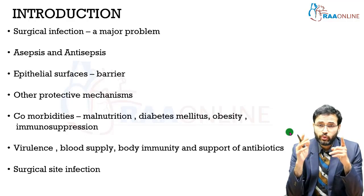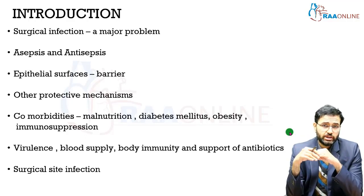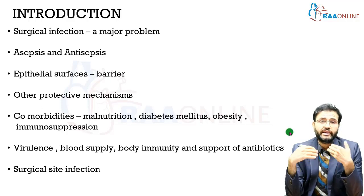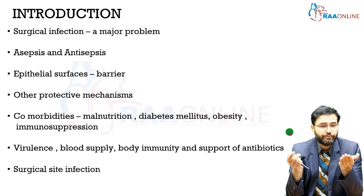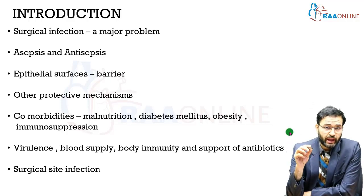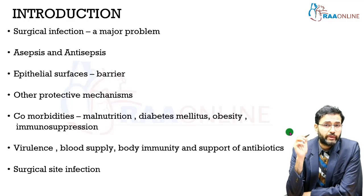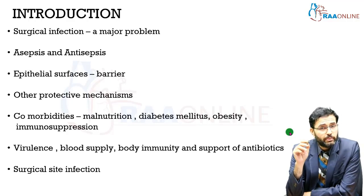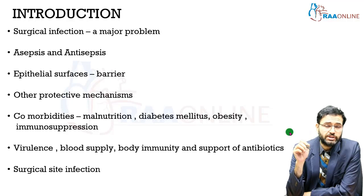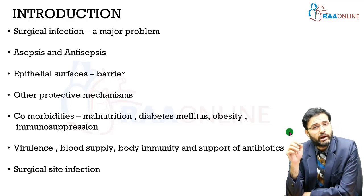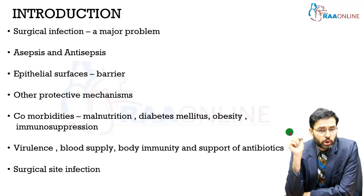Presence of comorbidities like malnutrition, diabetes mellitus, obesity, and immunosuppression can increase a person's susceptibility to infections. The severity and course of any infection depends upon the virulence of the underlying organism, blood supply to the area involved, body immunity, and whether antibiotics have been provided to the patient.